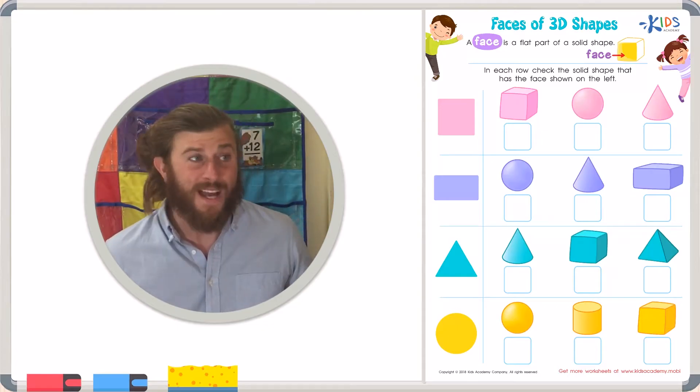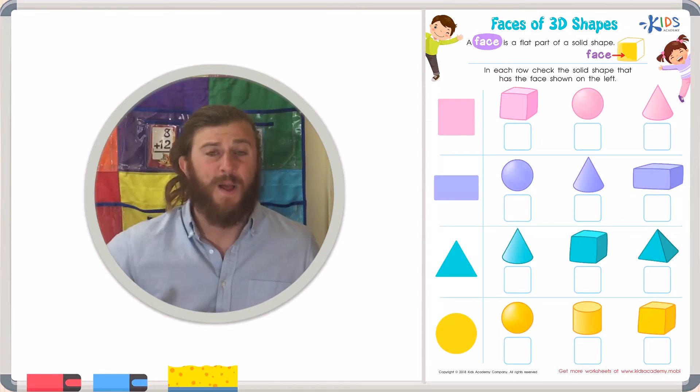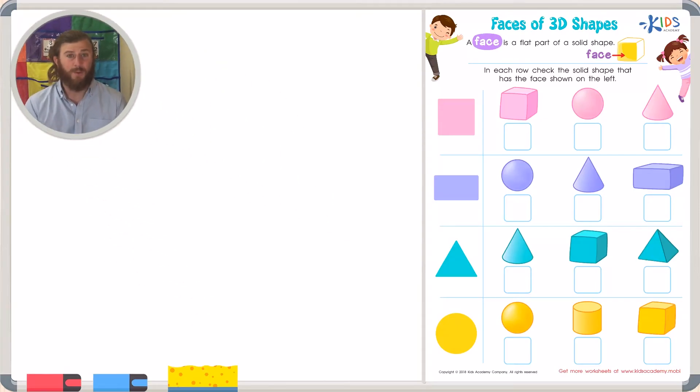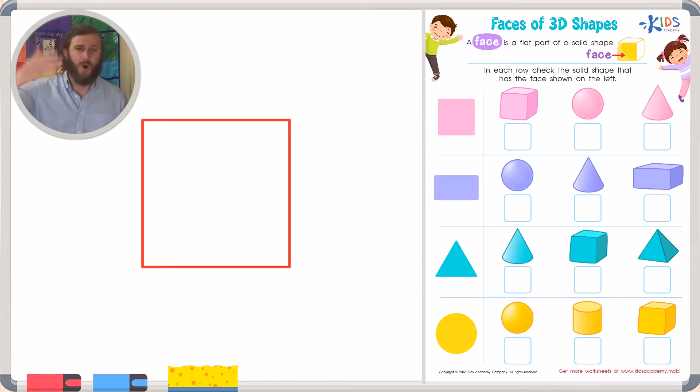A face is just the flat part of any shape. For example, if we look at our cube, this cube has many faces. It's all the flat surfaces that you see - in the front, on the side, on top, on the bottom. It's any flat surface of the shape. Let's read the directions for our worksheet and get started.